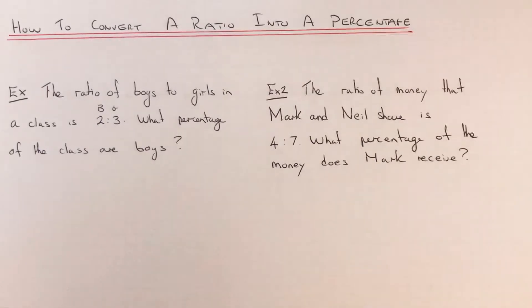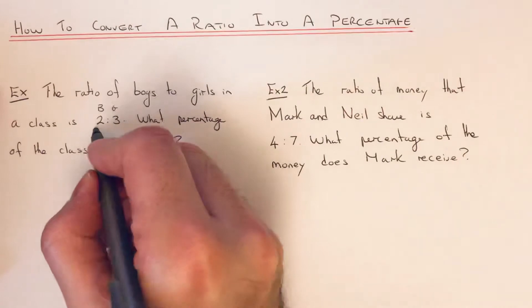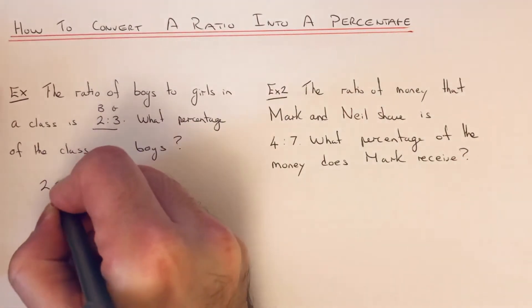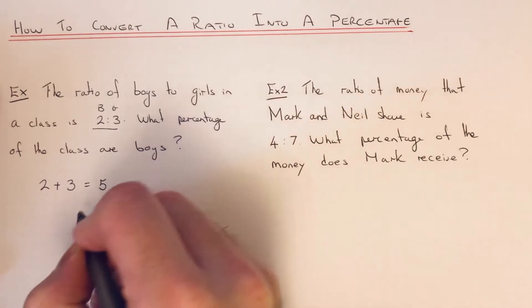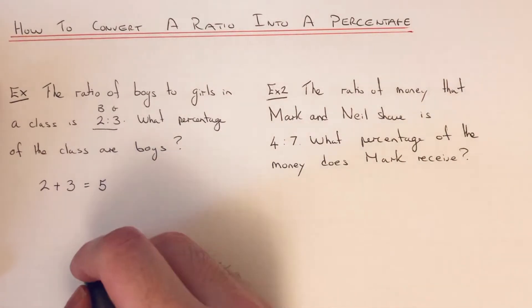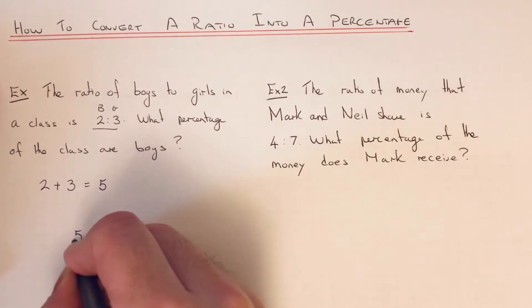The first thing you need to do is write down the fraction of the class which are boys. You can do this by adding up the parts in the ratio. So 2 add 3 is 5. This will go on the denominator of the fraction.